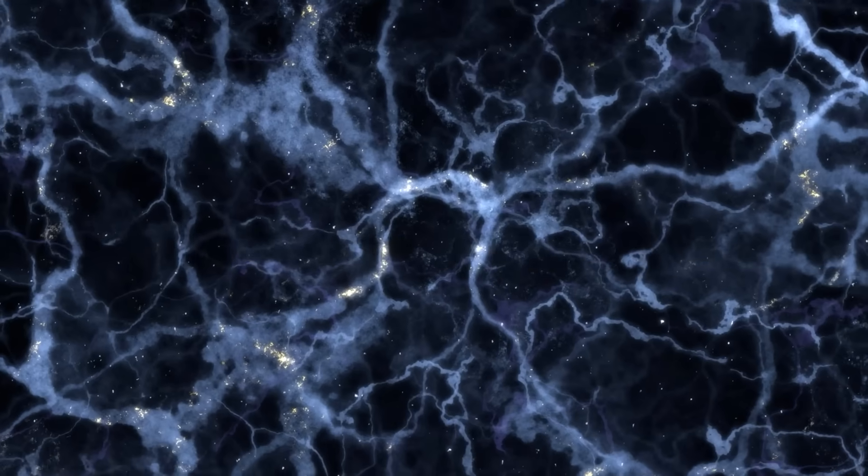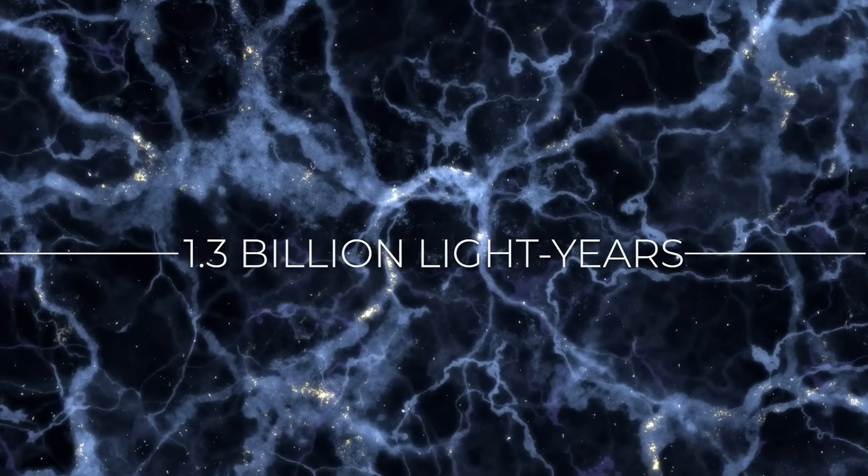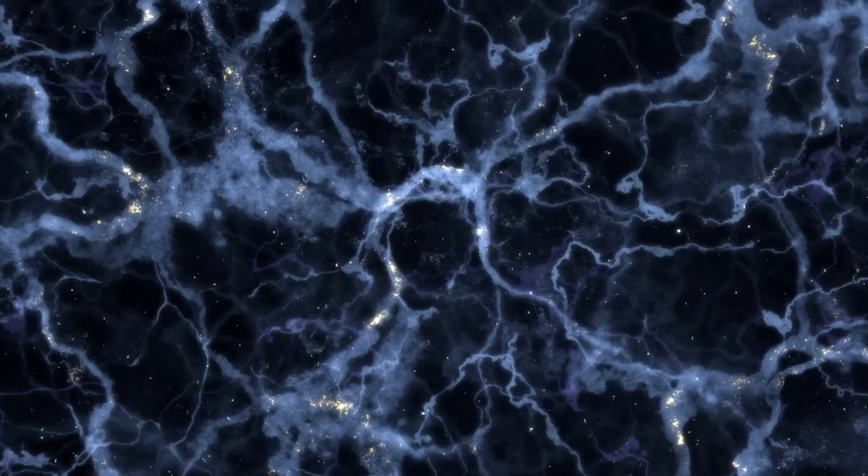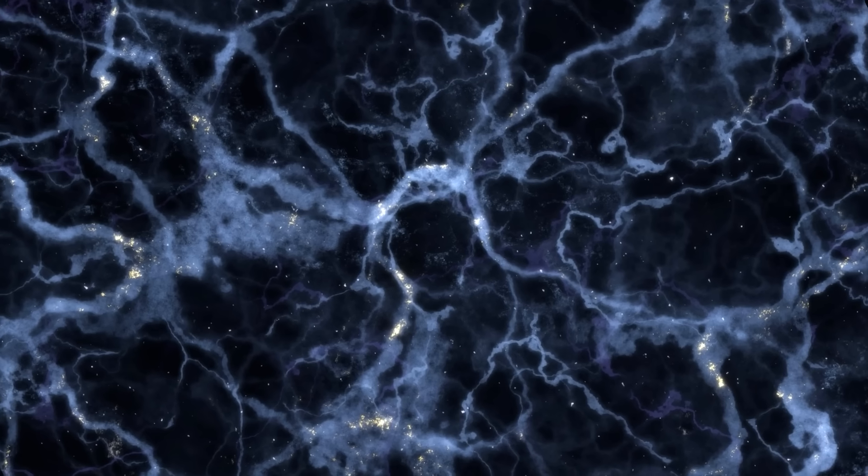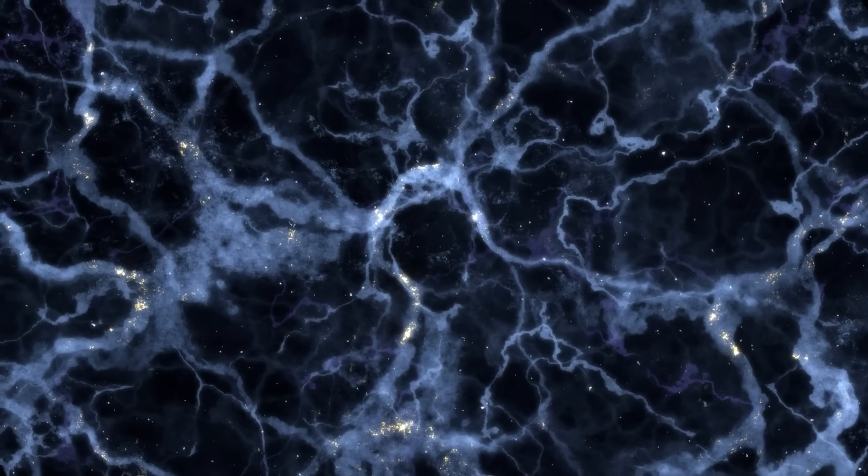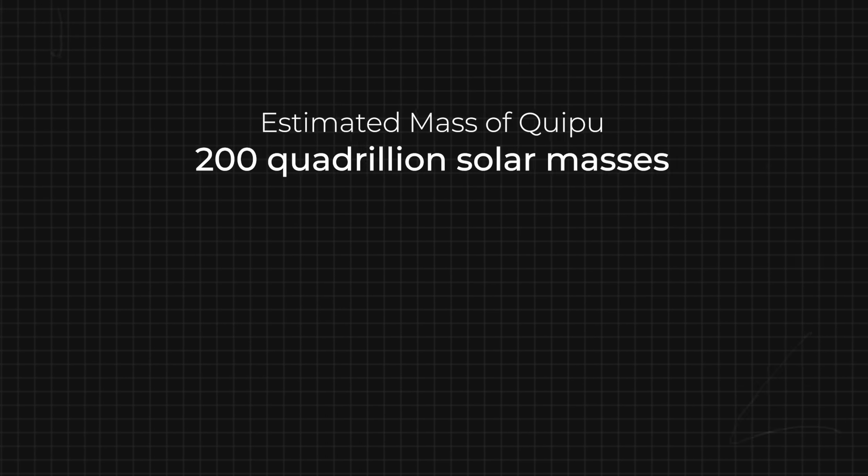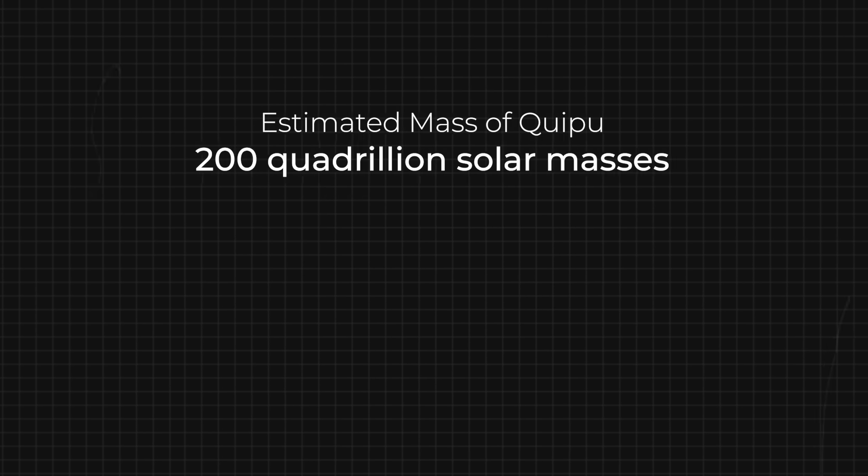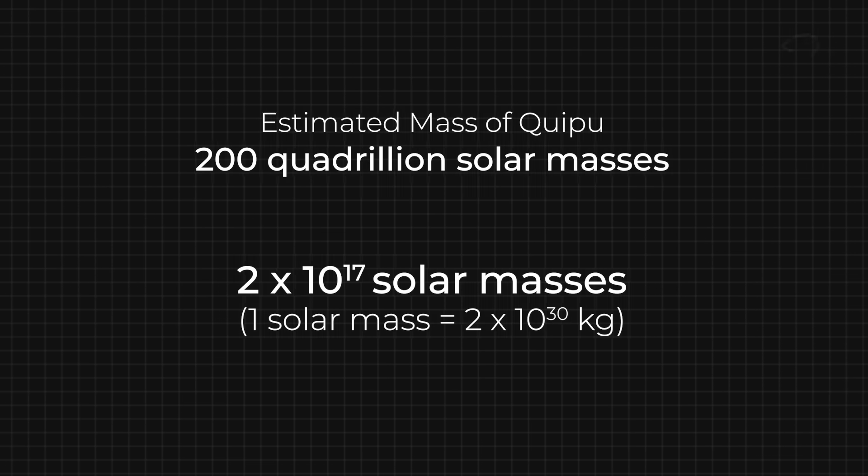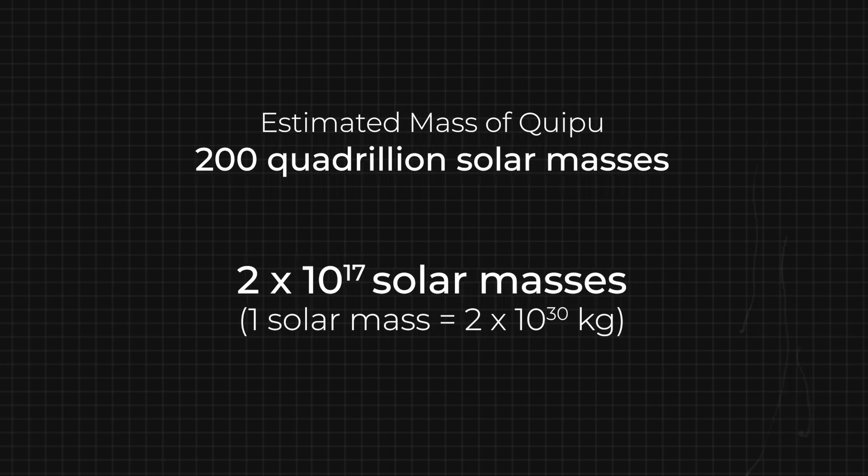Spanning an astonishing 1.3 billion light-years, Queepu is a massive cosmic structure made up of galaxy clusters, each holding hundreds or even thousands of galaxies. To put its scale into perspective, scientists estimate its total mass to be over 200 quadrillion times that of our Sun. That's a 2 followed by 17 zeros, a number so big it's hard to imagine.